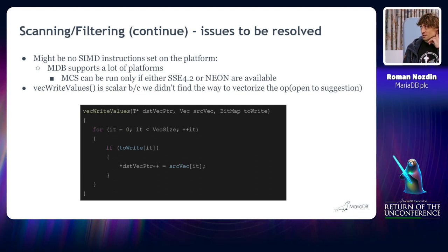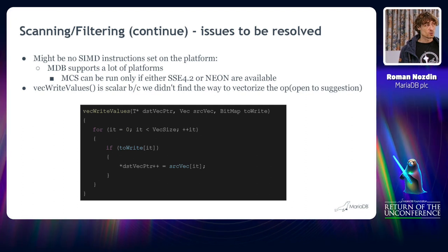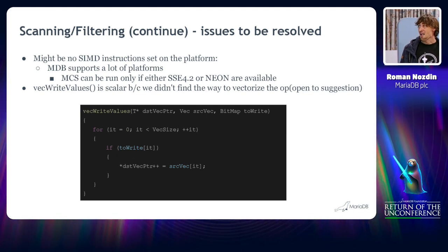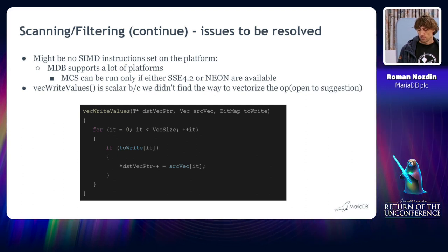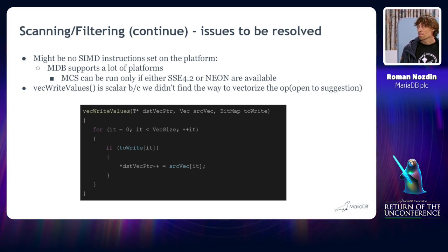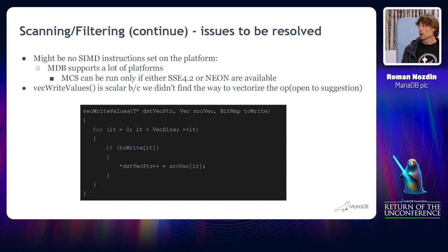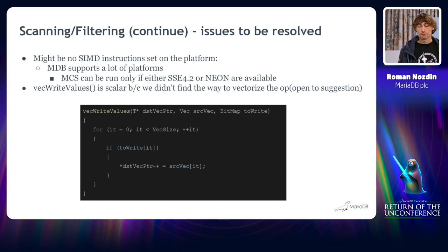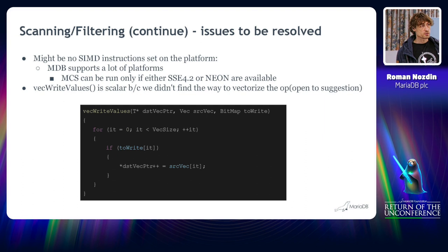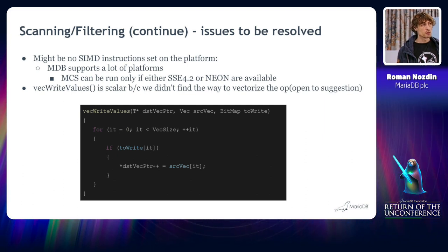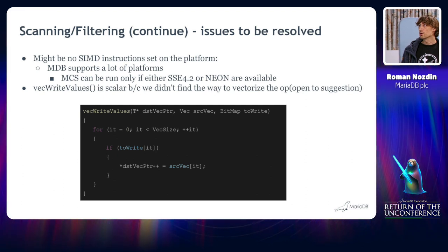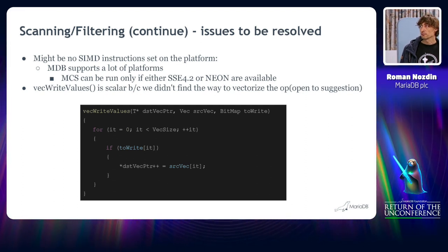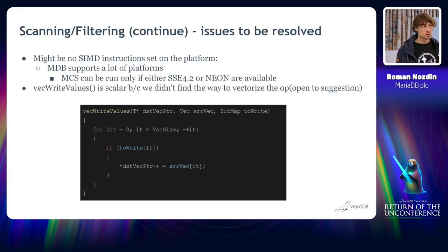The main decision that I made looking into all these options is that we have to somehow tell that we are vectorized now. So, we force to run ColumnStore only if there is at least SSE 4.2 or ARM Neon instruction sets are available on the platform. Otherwise, we just stop.